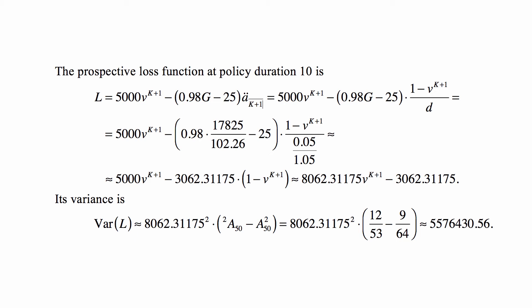The loss function is the present value of the death benefit, which is 5000·v^(K+1), where K is the future lifespan of a person. You could use a different notation, but this seems convenient. I know this is policy duration K, so already some time into the future, but let's say that future lifespan for this person looking forward from policy duration 10 is written here as K. Then (0.98G - 25)·ä_{K+1} is the premium after expenses.